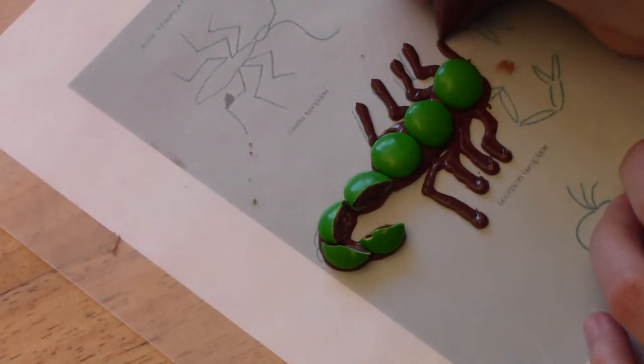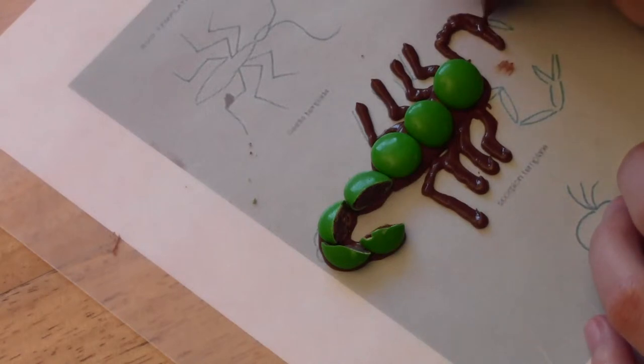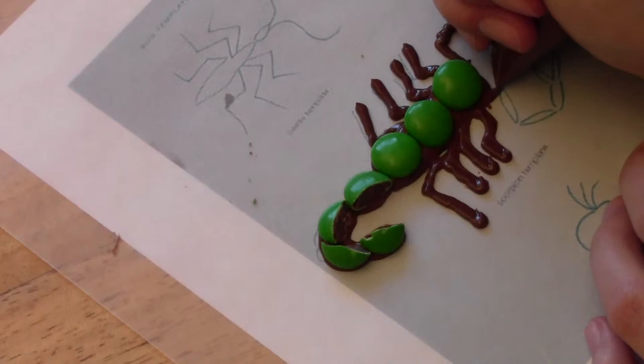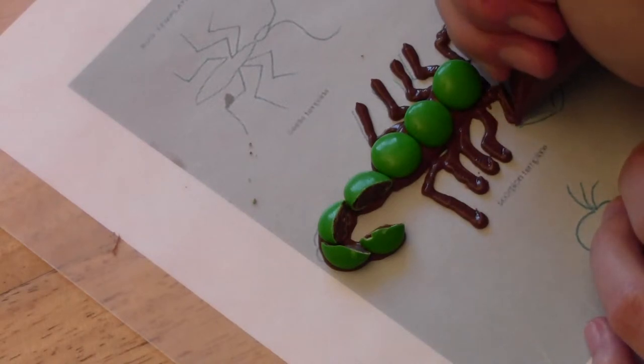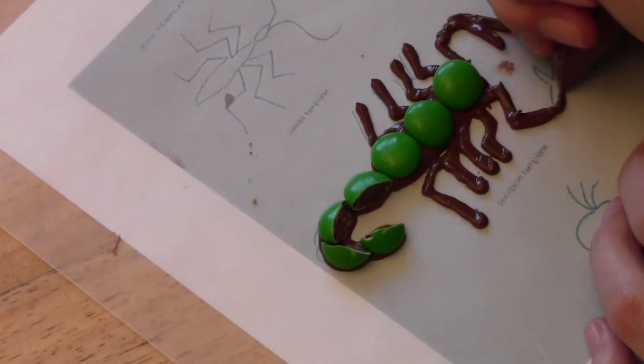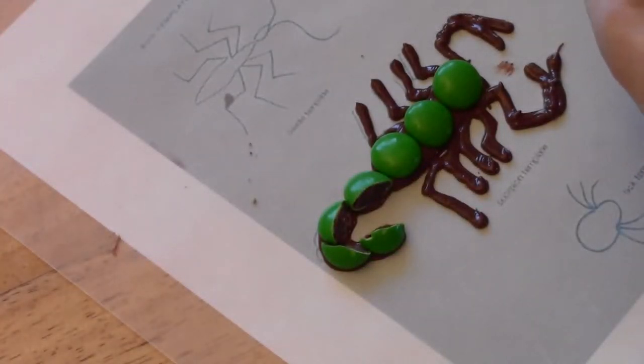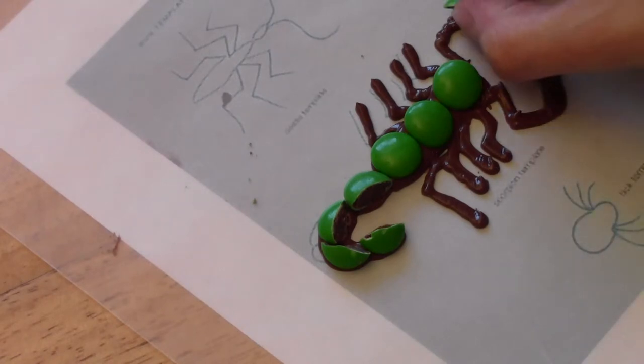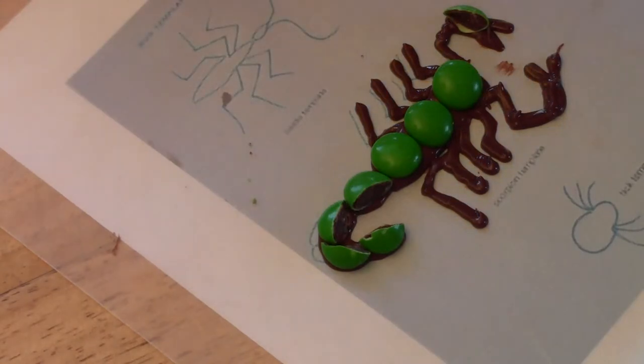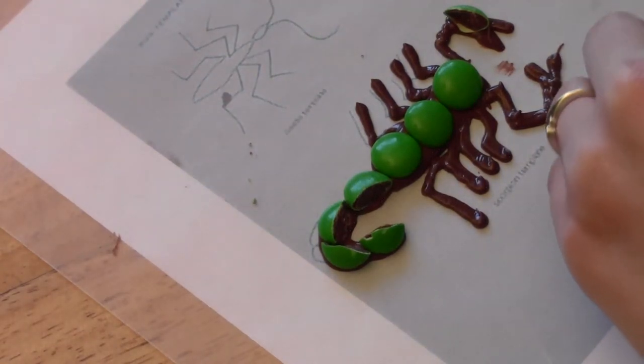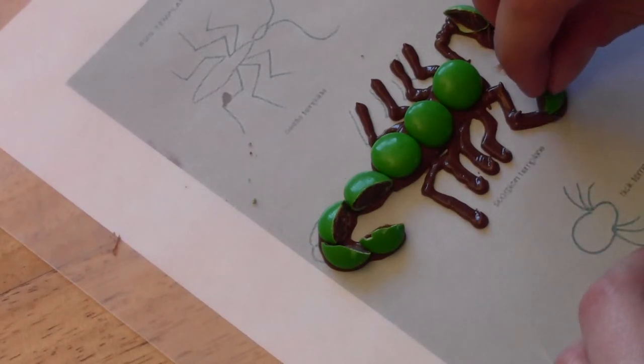And then his pinchers coming out. And I think I'm going to put, cut another M&M in half here. And we'll put one of these halves as his pincher. Didn't get that very well cut. Like that.